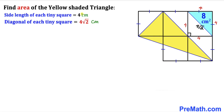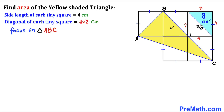So far we have found the side length of the tiny square is 4 centimeters and the diagonal is 4√2 centimeters. Now let's focus on yellow triangle ABC. This angle is 45 degrees and likewise this angle is 45 degrees, so the whole angle ABC is 45 plus 45 equals 90 degrees. Therefore yellow triangle ABC is a right triangle.